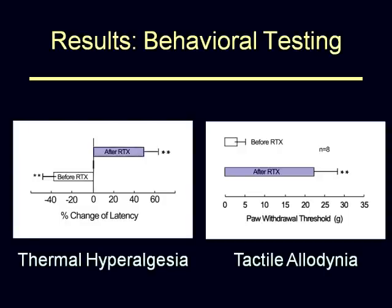The behavioral results have been previously published. You can see that after nerve injury, the rats have intense thermal hyperalgesia. After RTX injection, the rats become hypoalgesic to thermal stimulation. Similar results can be observed in tactile allodynia — before RTX, the von Frey filaments that create paw withdrawal are below 5 grams, the threshold is 8 grams for tactile allodynia, and you can see after RTX it goes up to 25.